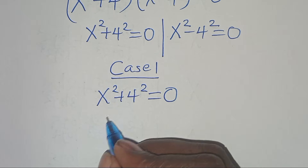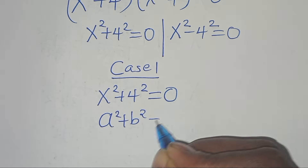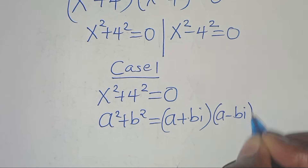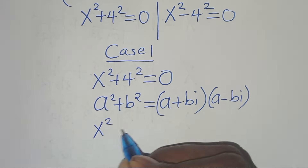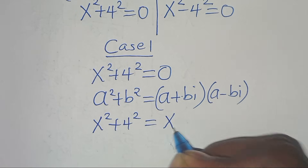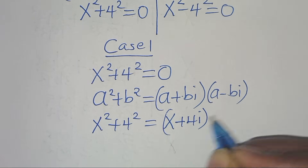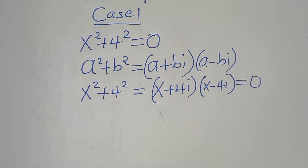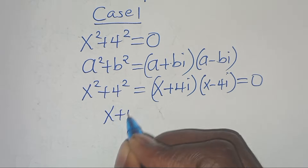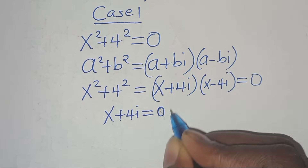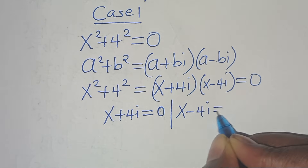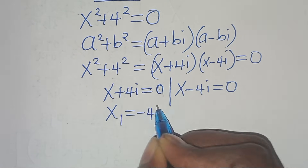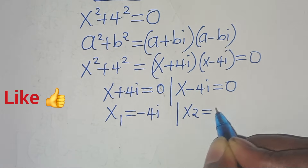This equation is in the form a² + b², which factors as (a + bi)(a - bi). So x² + 4² equals (x + 4i)(x - 4i) = 0. This gives x + 4i = 0 and x - 4i = 0, so x₁ = -4i and x₂ = 4i.